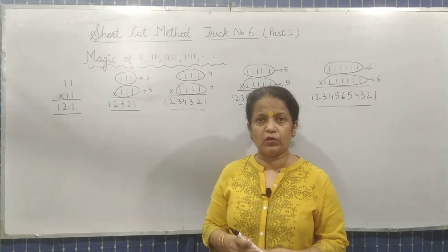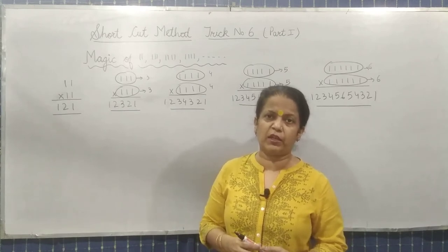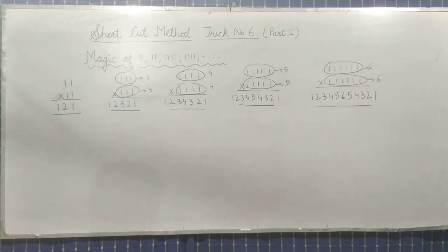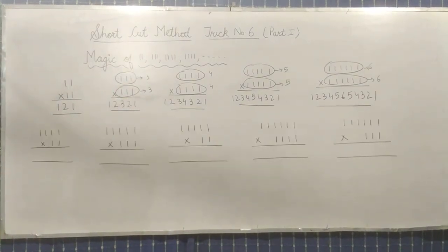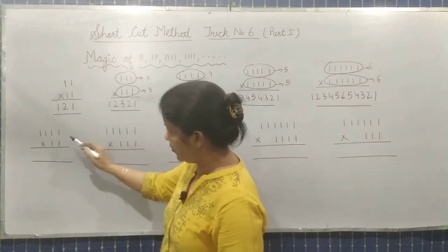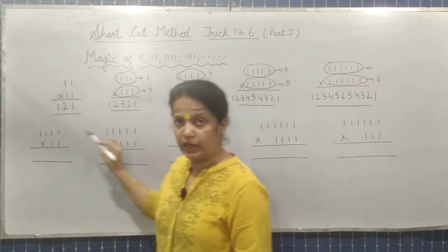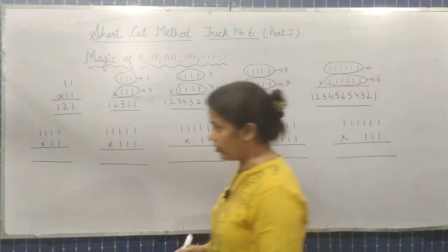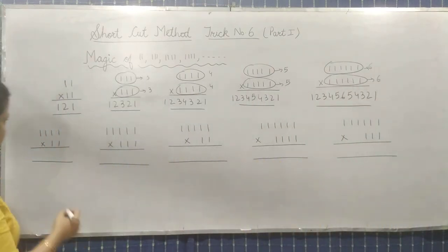what will happen if the number of 1's are not same? Then what should be the method to do the multiplication in that case? Just have a look. Now in this case, the number of 1's are different in all the examples. Now let's have a look for these type of questions.